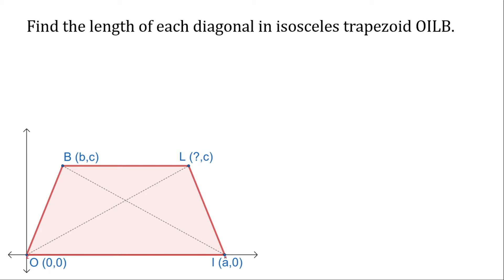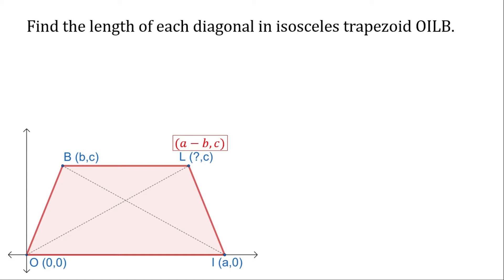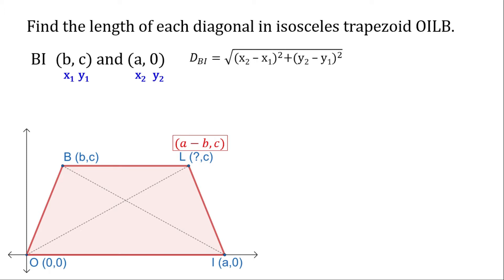From this point to this point, the measurement is A units. Since this is an isosceles trapezoid, these two sides are congruent to each other. So we subtract the distance of this point to the y-axis from A, and that gives us the coordinates A, B for this point. One property of an isosceles trapezoid is that it has congruent diagonals, and hopefully we can prove it here using our coordinates.